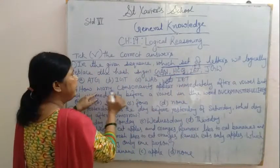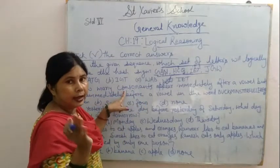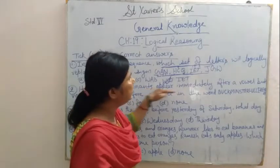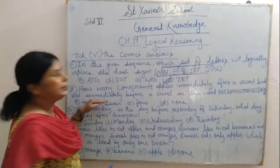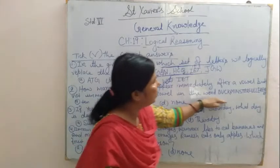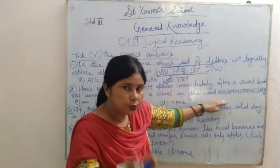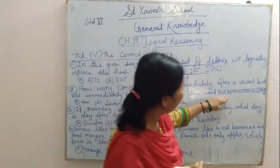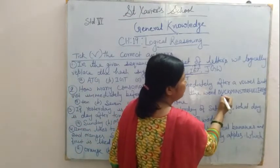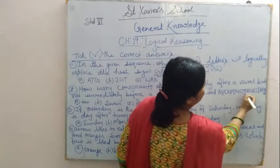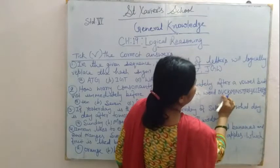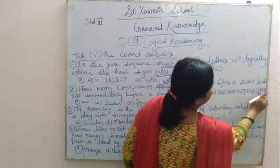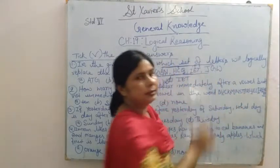Now the second question: how many consonants appear immediately after a vowel but not immediately before a vowel in the word? There are five vowels in the alphabet and the rest are consonants. Let's find out which are vowels in this word. The vowels are U, I, A, U, E, I — there are seven vowels in this word.